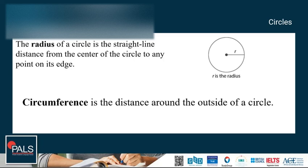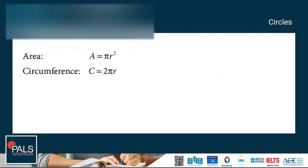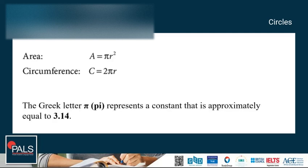Finally, the distance around the outside of the circle is called its circumference. The circumference is generally indicated by the letter C. The area is equal to πr². The circumference C is equal to 2πr. The Greek letter pi represents a constant that is approximately equal to 3.14. When working with pi, you can either use this approximation or use the pi button on your calculator for a more exact answer.